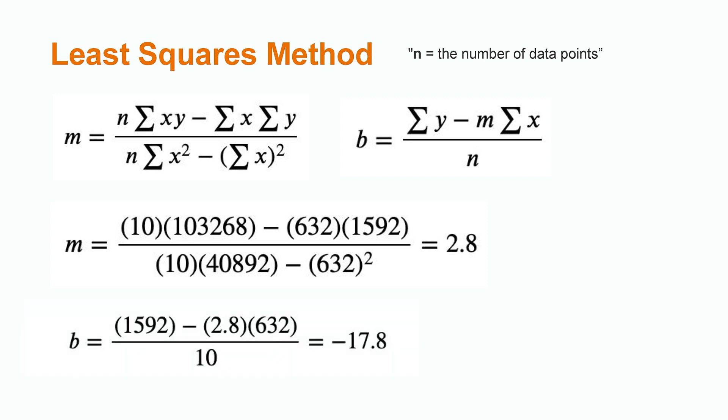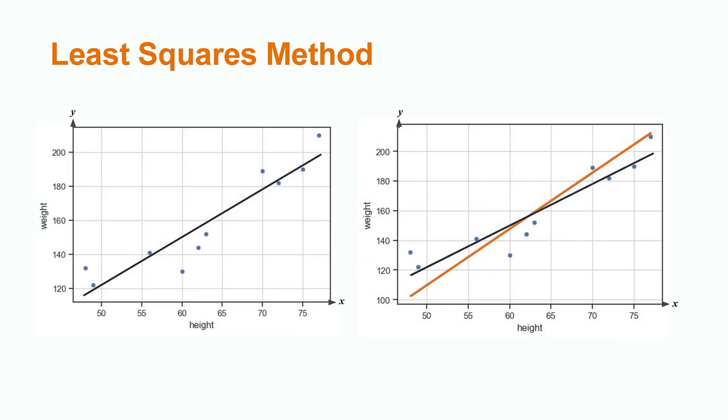Compared to the line we drew earlier, we can see that it's pretty close. That means, according to the least squares method, we almost drew the perfect linear model by hand. Go us.